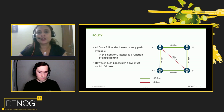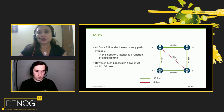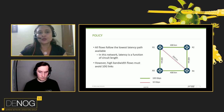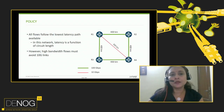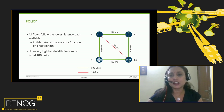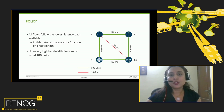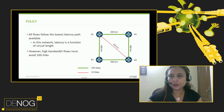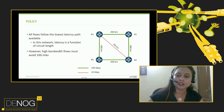All the flows are supposed to follow the lowest latency path available. But there are some high bandwidth flows that must avoid 10 gig links. The red link is a 10 gig link, whereas all the green links are 100 gig links. Traffic going from R1 to R4 should follow the low latency path — R1 to R4 directly — because that is the lowest latency path. Whereas high bandwidth traffic should not use the R1 to R4 link because that's a 10 gig link.